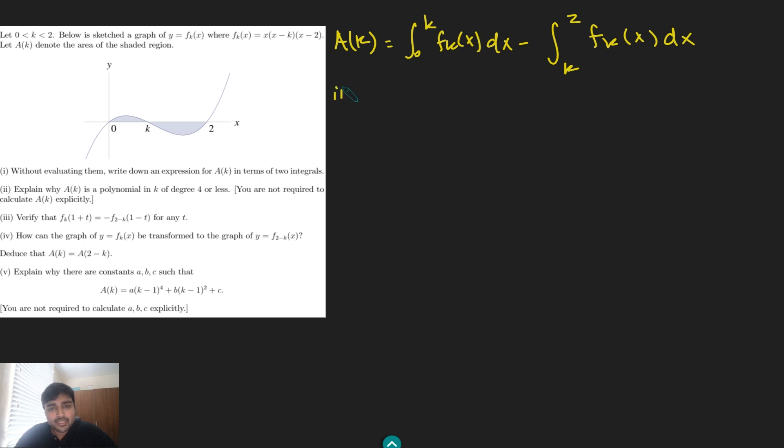Part two, we want to explain why a(k) is a polynomial in k of degree 4 or less. You are not required to calculate ak explicitly. Okay, so one thing you could do is calculate ak explicitly but we're told we don't have to do so it's probably easier to not. How do we prove it's a polynomial of degree 4 or less? Well, let's look at our answer from the previous part, a very common math strategy. Let's look at this.